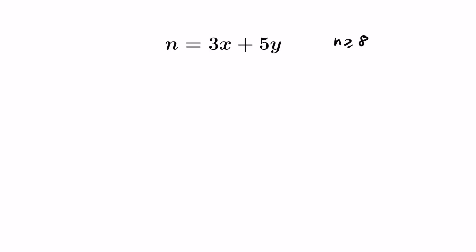Let's prove that regardless of what positive integer n we pick greater than or equal to 8, we can represent n in the following way: 3 times x plus 5 times y, where x and y are non-negative integers.